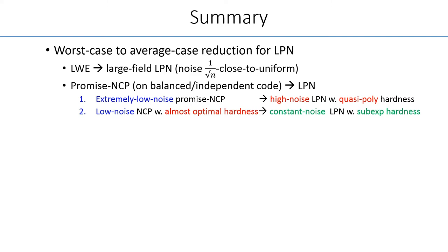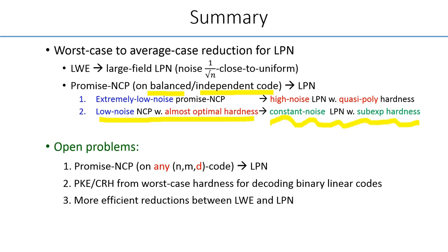Second, we generalize the reductions of BLVW from promise NCP to LPN. The underlying NCP problem we consider includes not only the balanced code, but also independent code. In addition to what is approved in BLVW, we also show that under the nearly optimal hardness assumption about the low-noise NCP, it implies the desired end result, namely, sub-exponential hardness for standard LPN.